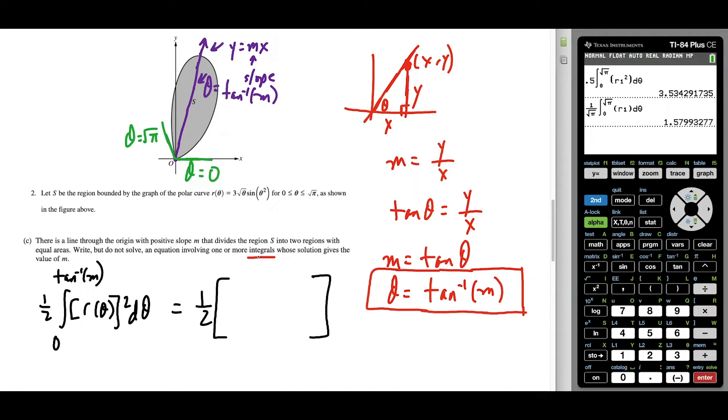we said the area of region S was 3.534 square units. So this equation here suffices the area from zero to tangent inverse of m of this region here is exactly half of the entire area. And just know if I want, there's a few different ways I could do this, I could also make my lower limit tangent inverse of m, and my upper limit square root of pi, because this area on the left is exactly half of the entire area as well.